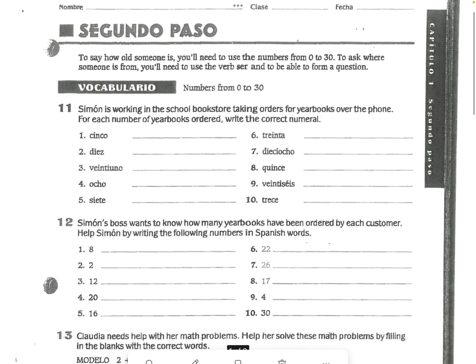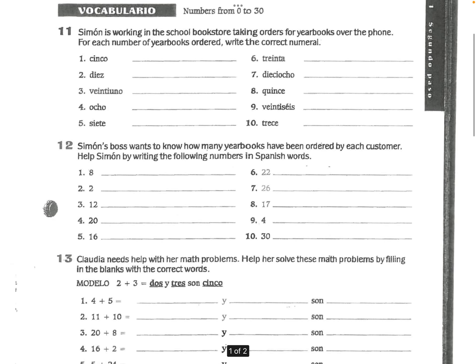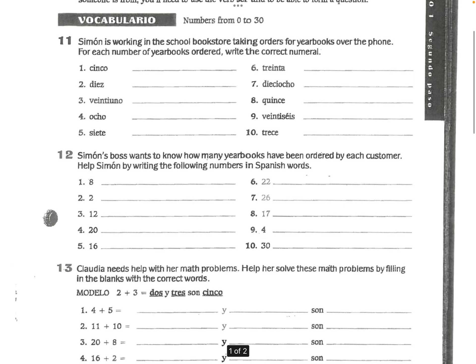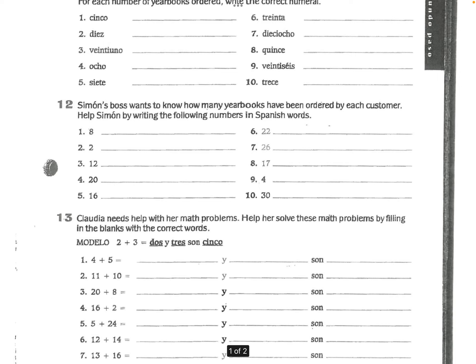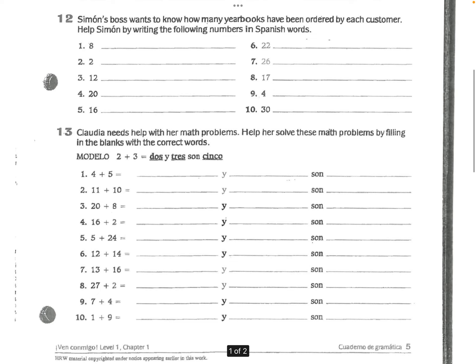What it is is similar to what you did with your partner yesterday. Section 11, Simone is working in the school bookstore taking orders — for each number of books ordered, write the correct numeral. Section 12, there are some numbers and you are spelling those numbers out. Section 13, you're doing a little math. Like in the example, they said two plus three is five — dos y tres son cinco. So for number one, you'd write cuatro y cinco son nueve.